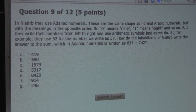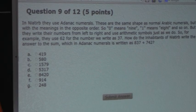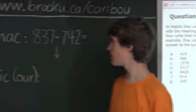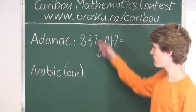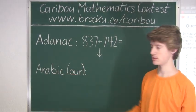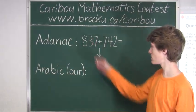since 0 plus 9 is 9, and 1 plus 8 is 9, we know that we can just do 9 minus each digit to find each Arabic digit. Okay, so let's start.